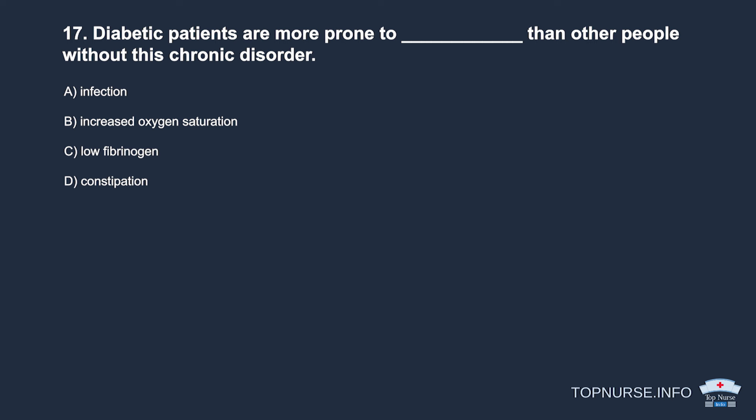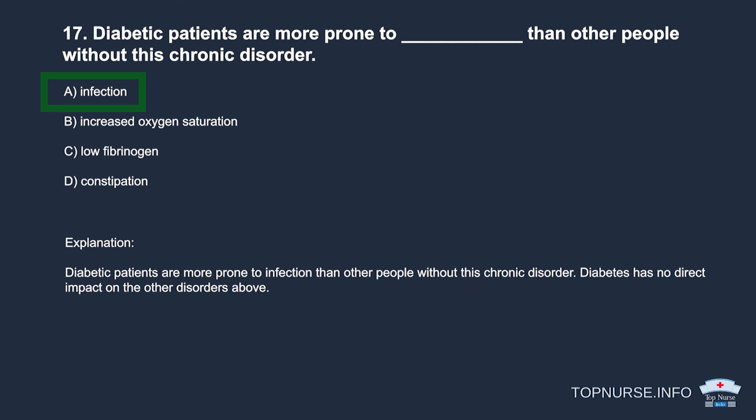Question 17: Diabetic patients are more prone to _____ than other people without this chronic disorder. a. Infection. b. Increased oxygen saturation. c. Low fibrinogen. d. Constipation. Correct answer: a. Infection. Diabetic patients are more prone to infection. Diabetes has no direct impact on the other disorders listed.